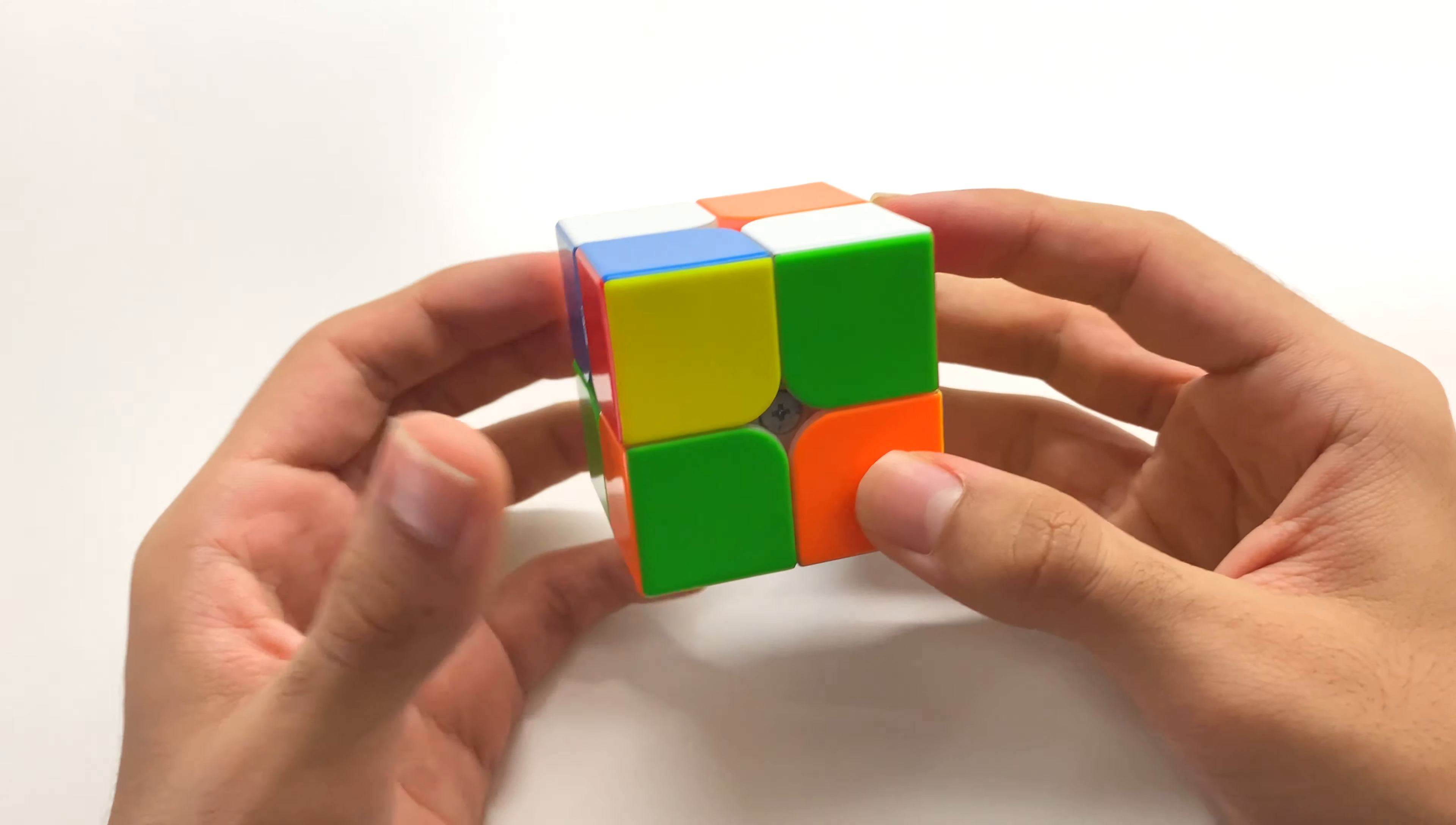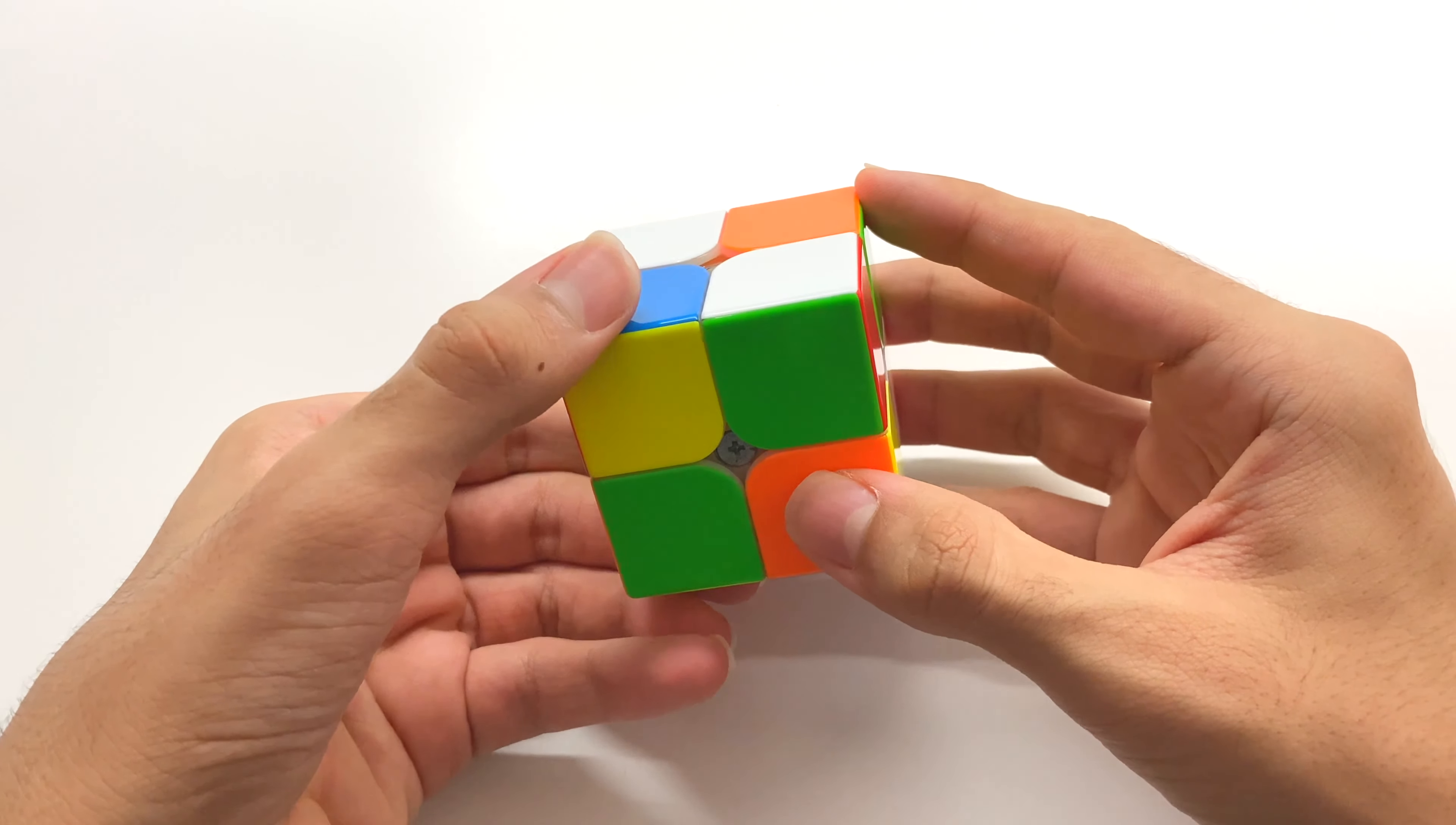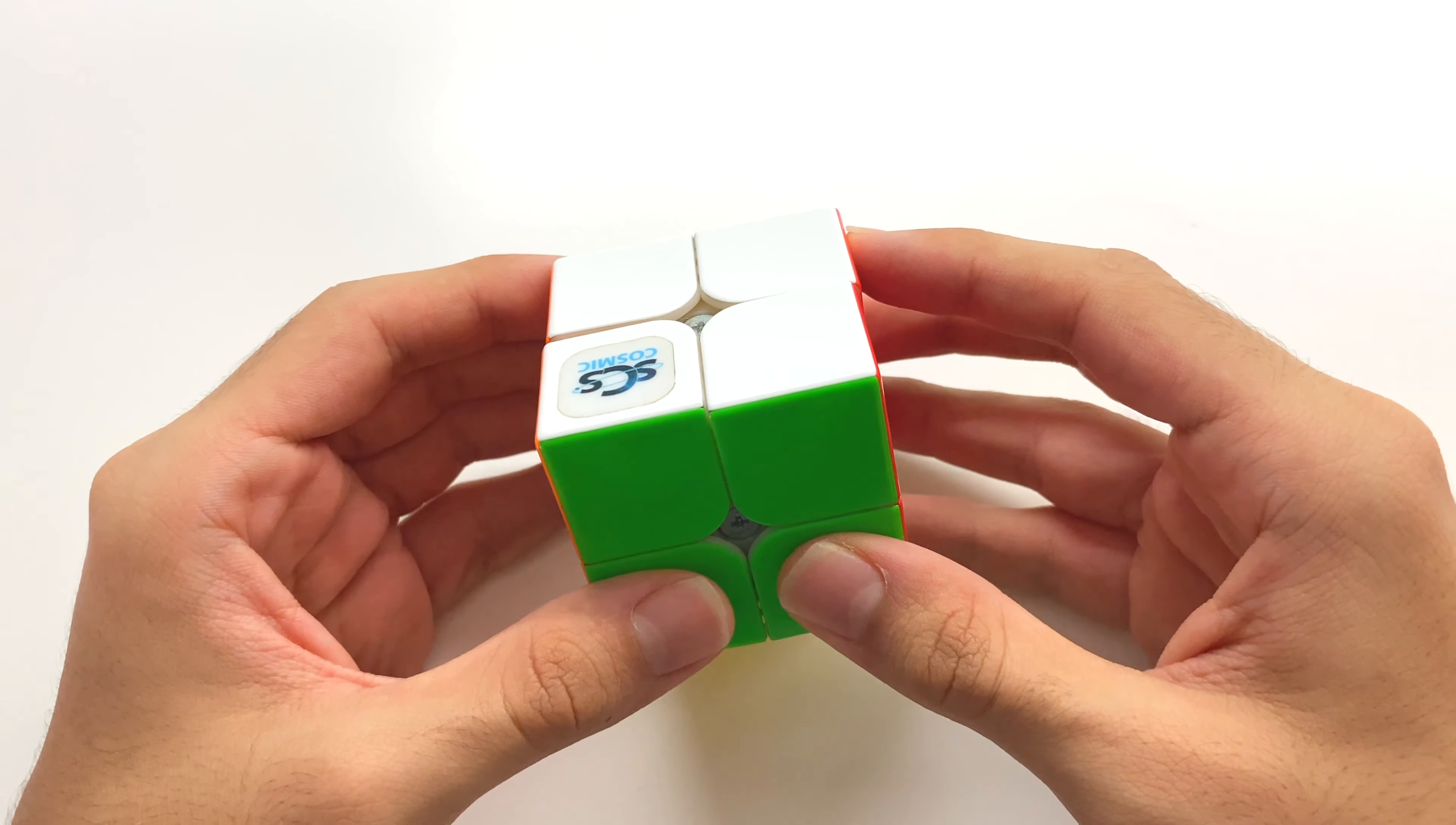So I got a 2.12 on this first solve, which is honestly pretty good considering how bad this scramble is and I want to quickly go over my solution. What I saw on this scramble was this blue block right here and obviously this solve was one looked and I saw you could build a blue EG1 face in five moves here. I solved it like this. I noticed my bar was on the right, I wanted it in the back, so I rotated and I solved the EG1 like this and I had no UF. So yeah, not a great solution at all, but it was the best I could find in 15 seconds. Let's move on to the next solve.